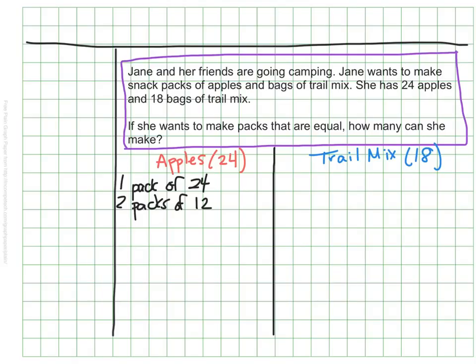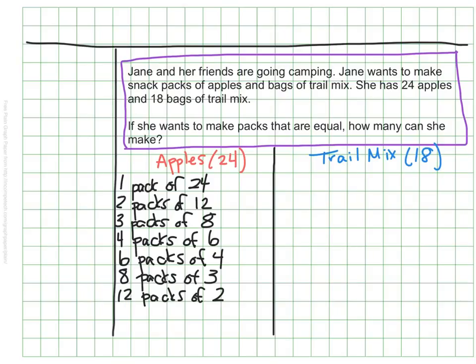If she wanted to, she could make three packs of eight. Three times eight would make 24 apples as well. Or maybe she'd like to make four packs of six apples. In addition, she could make six packs of four apples. She could make eight packs, each with three apples. She could also have 12 snack packs, each with two apples. Lastly, she could take all 24 apples, separate them out all into 24 different packs, and each have one apple.